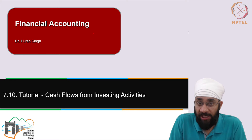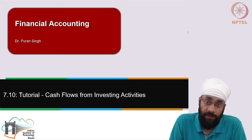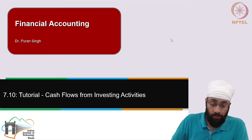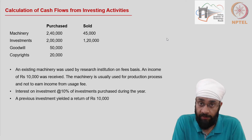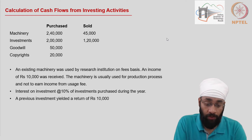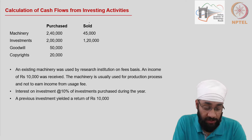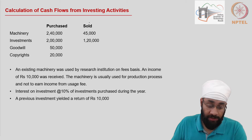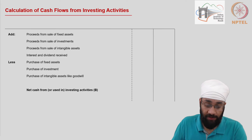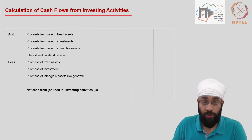This is a tutorial on cash flows from investing activities. We are going to use this information and calculate the cash flows as a result of all these activities. We have been given data about purchases or sale of certain fixed assets — machinery, investment, goodwill, copyright — and some additional details have also been provided. Using this we will prepare the cash flows from investing activities in the format we have been using.